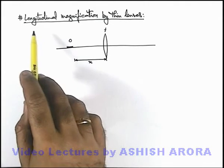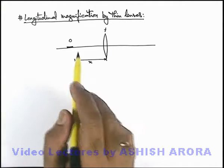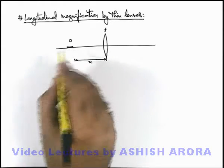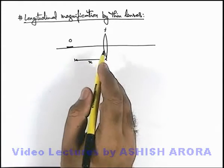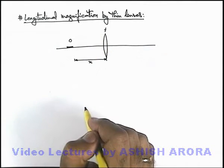Let us now study the longitudinal magnification by thin lenses. Here, if a small object which has its width along the principal axis is placed at a distance x from a thin convex lens having focal length f.